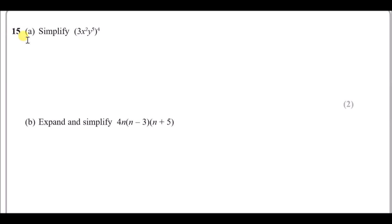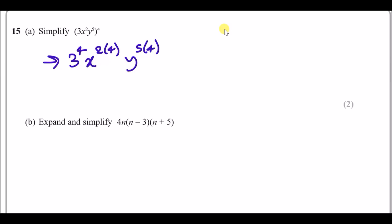Number 15a: simplify (3x²y⁵)⁴. When you have something like this it's easy — all you literally do is distribute the power 4 to everything. So we're going to have 3 to the power of 4, x already has a power so it'd be 2 times 4, y has a power so it'd be 5 times 4. Then simplify: 3 to the power 4 gives us 81, x to the power 2×4 which is 8, so x to the power 8.